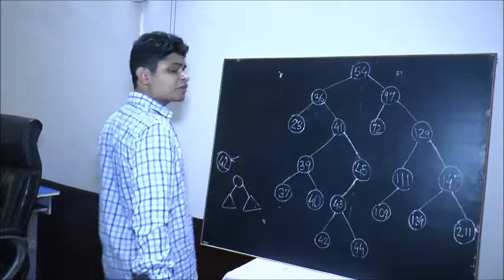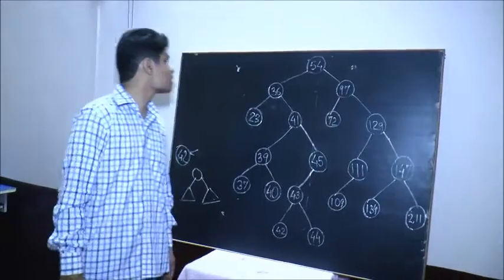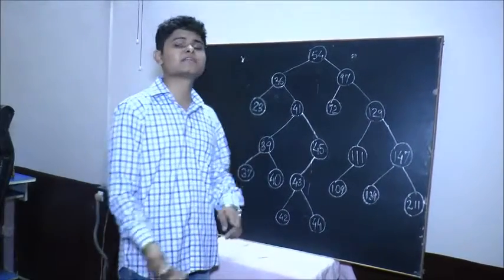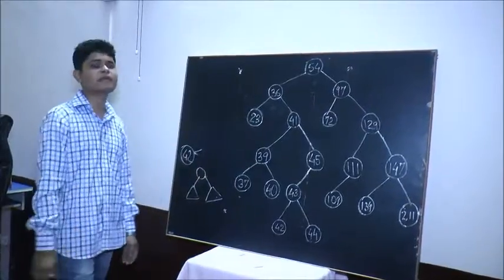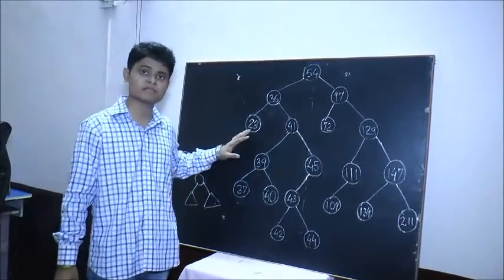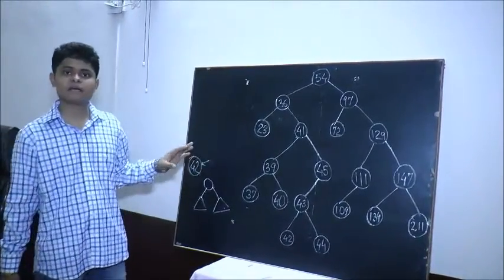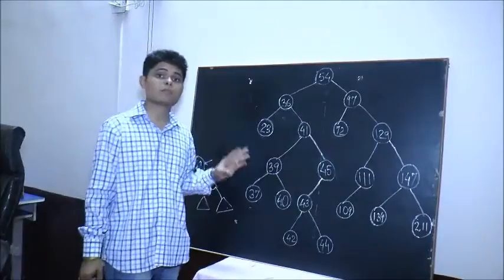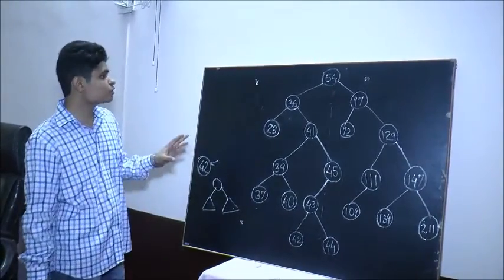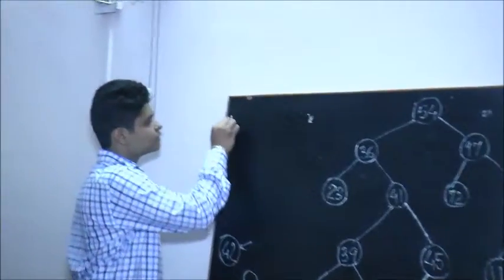Now for solving any algorithmic problem we need to first make sure that our logic is correct, and then we can go on improving the efficiency by reducing the time complexity and space complexity, and then we can try for further constant optimizations. So what that would mean in this case here is that however you may delete this node in a binary search tree, the binary search tree properties must be valid after the deletion. So the procedure of deleting a node in a binary search tree can be divided into three cases.